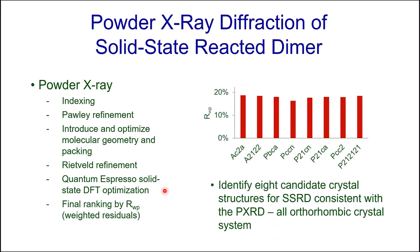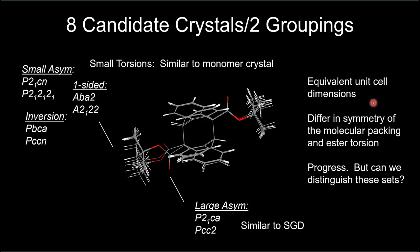This allows us to identify eight candidate crystal structures for the solid state reacted dimer consistent with powder X-ray diffraction. They're all members of the orthorhombic crystal system, labeled by their space groups, and fall into roughly two sets of nearly overlapping structures: those with small torsions similar to the monomer crystals — where the tert-butyl ester groups are rotated inward — and structures with large asymmetry where one tert-butyl ester group has rotated past 90 degrees, similar to the solution-grown dimer.